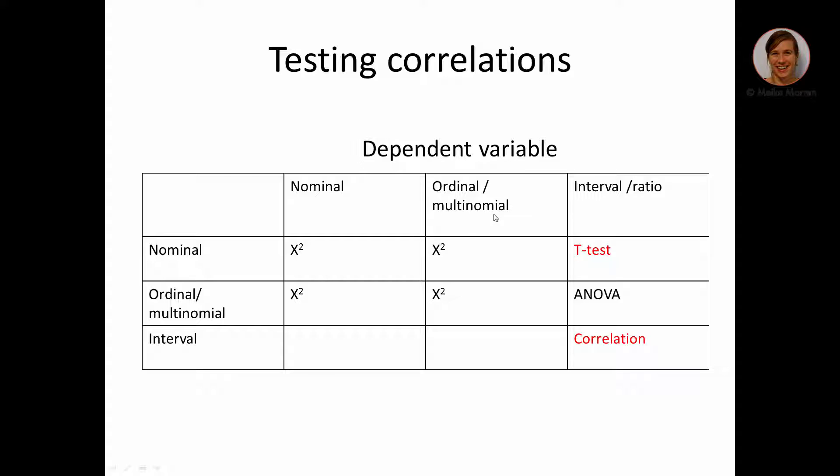If it is ordinal, meaning for instance education with three or four levels, or maybe marital status, which would be multinominal as there is no ordering between the categories, you would also need the chi-square value.